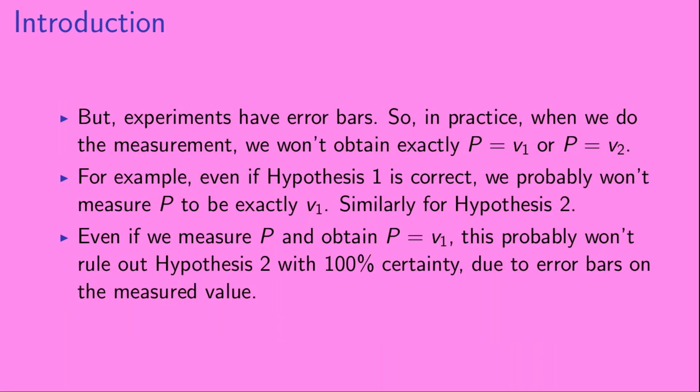But experiments have error bars. So in practice, when we do the measurement, we won't obtain exactly P equals v1 or P equals v2. For example, even if hypothesis one is correct, we probably won't measure P to be exactly v1, and it works the same way for hypothesis two. Even if we measure P and obtain P equals v1, this probably won't rule out hypothesis two with 100% certainty due to the error bars on the measured value.